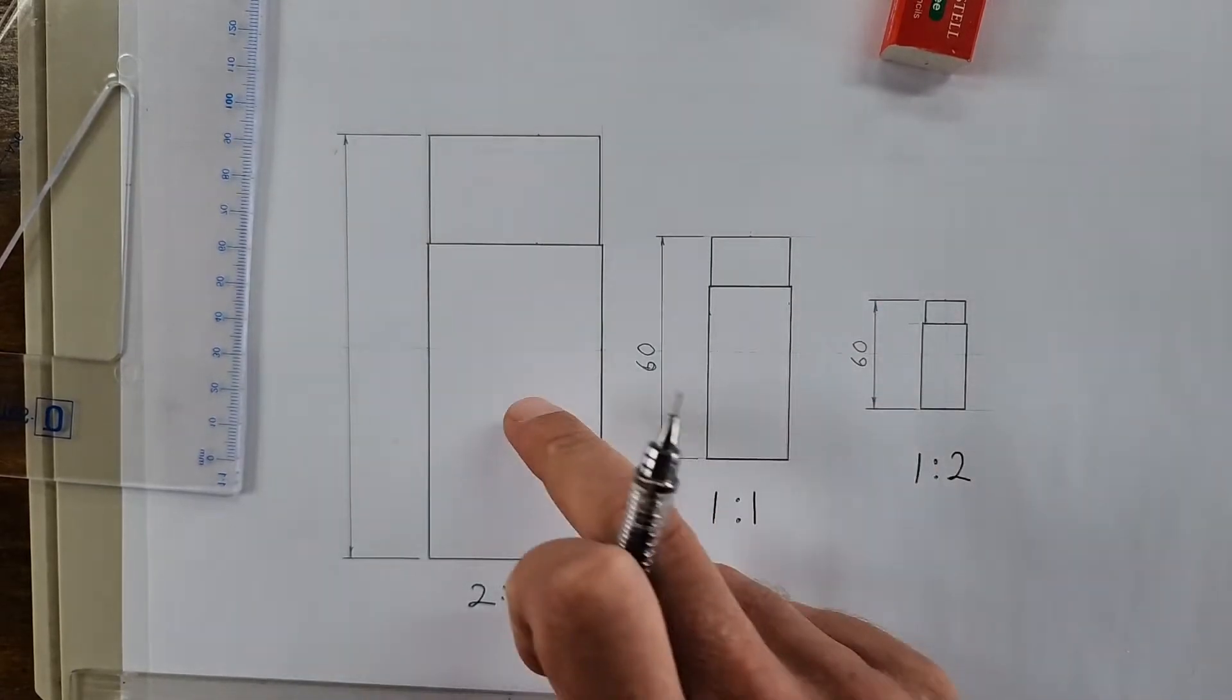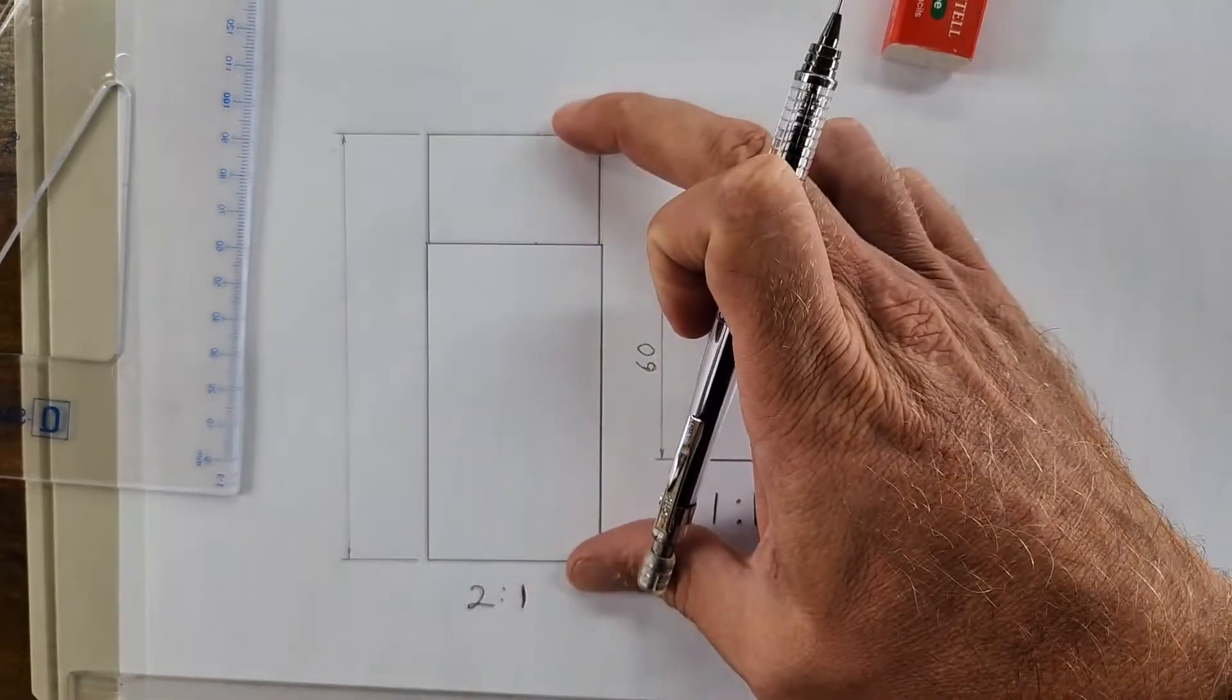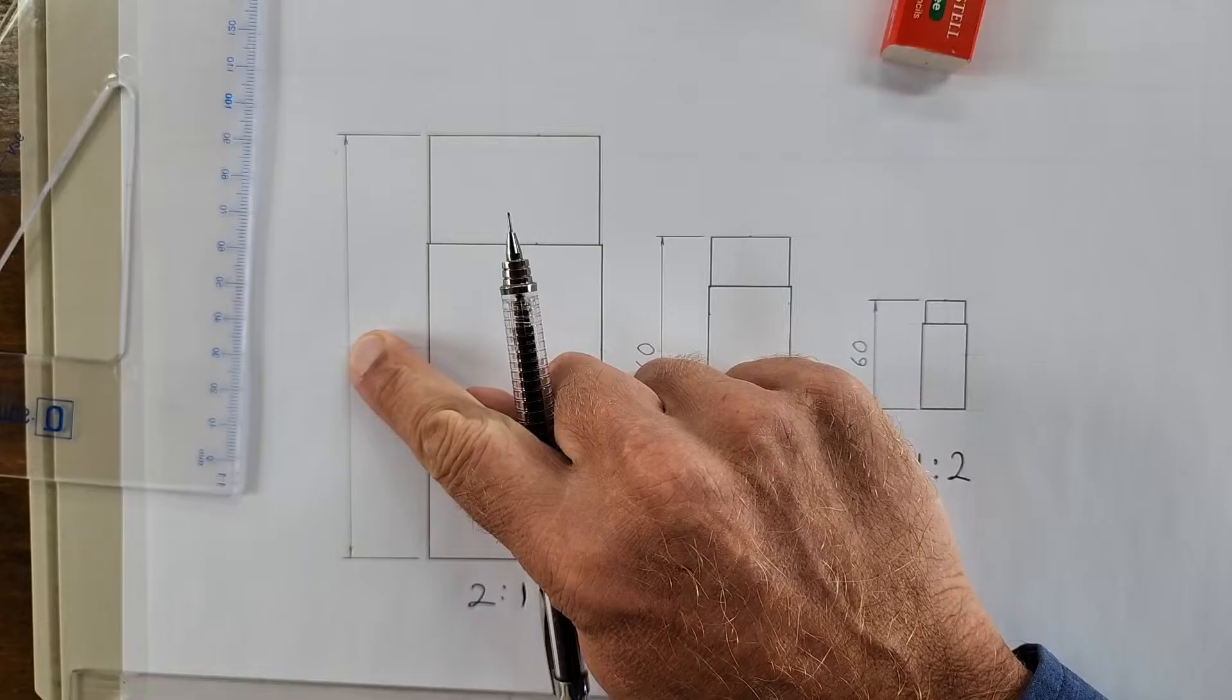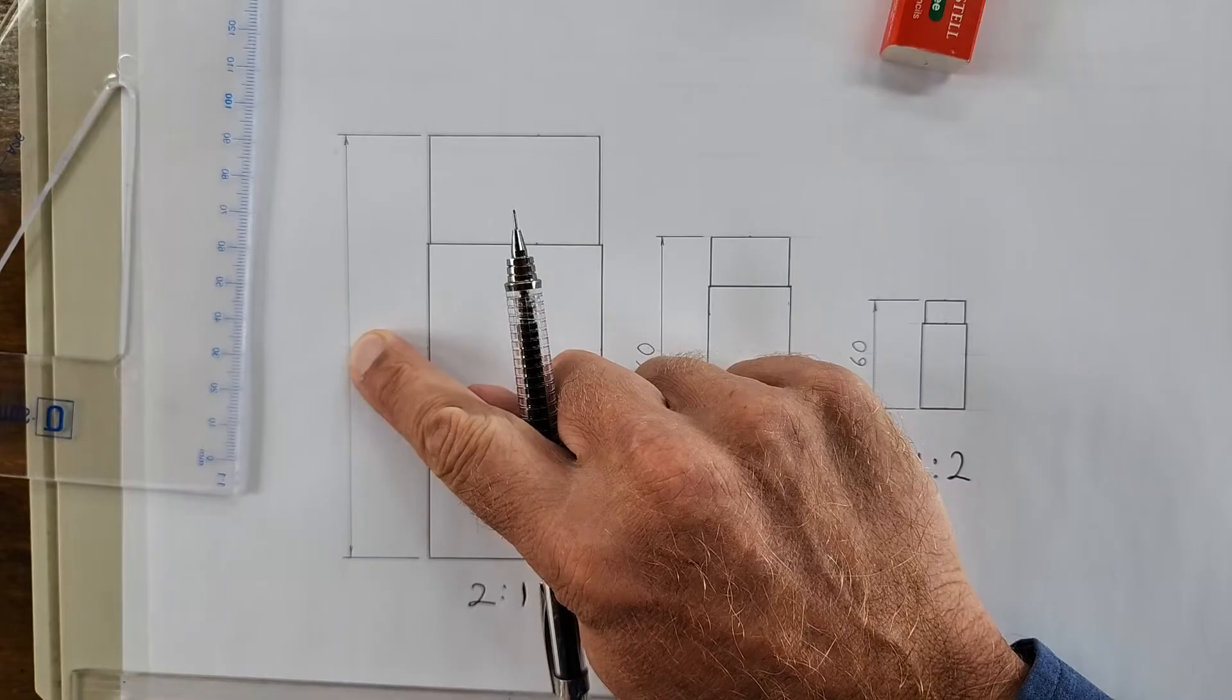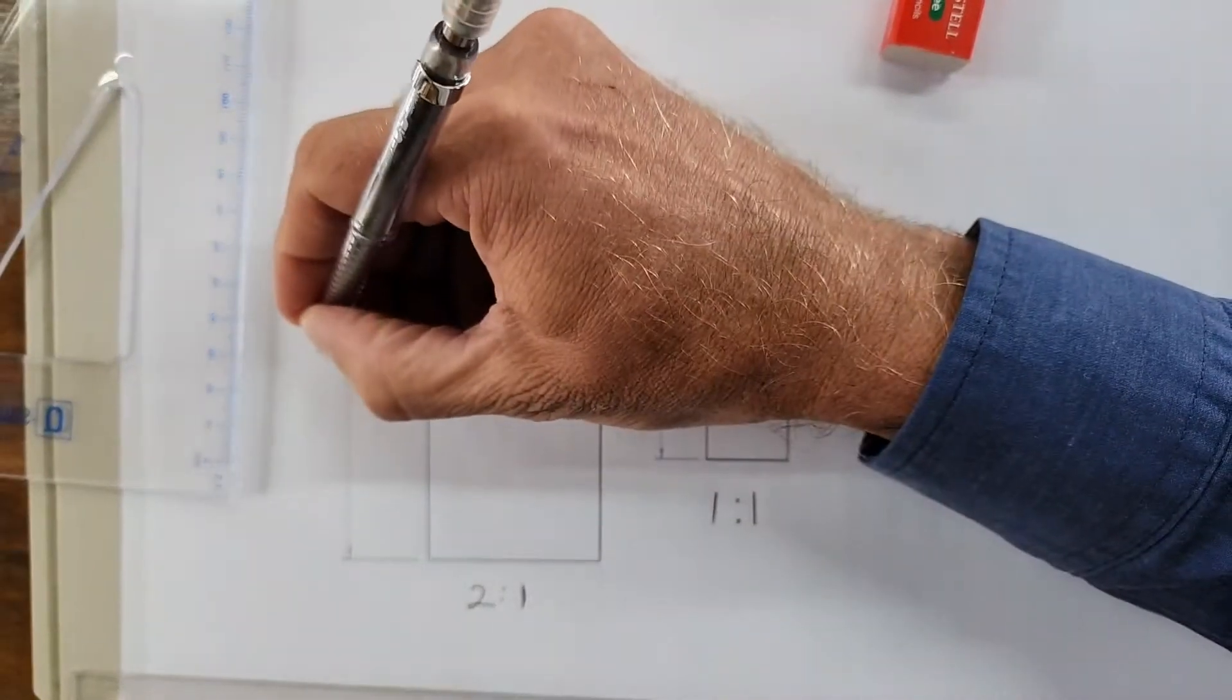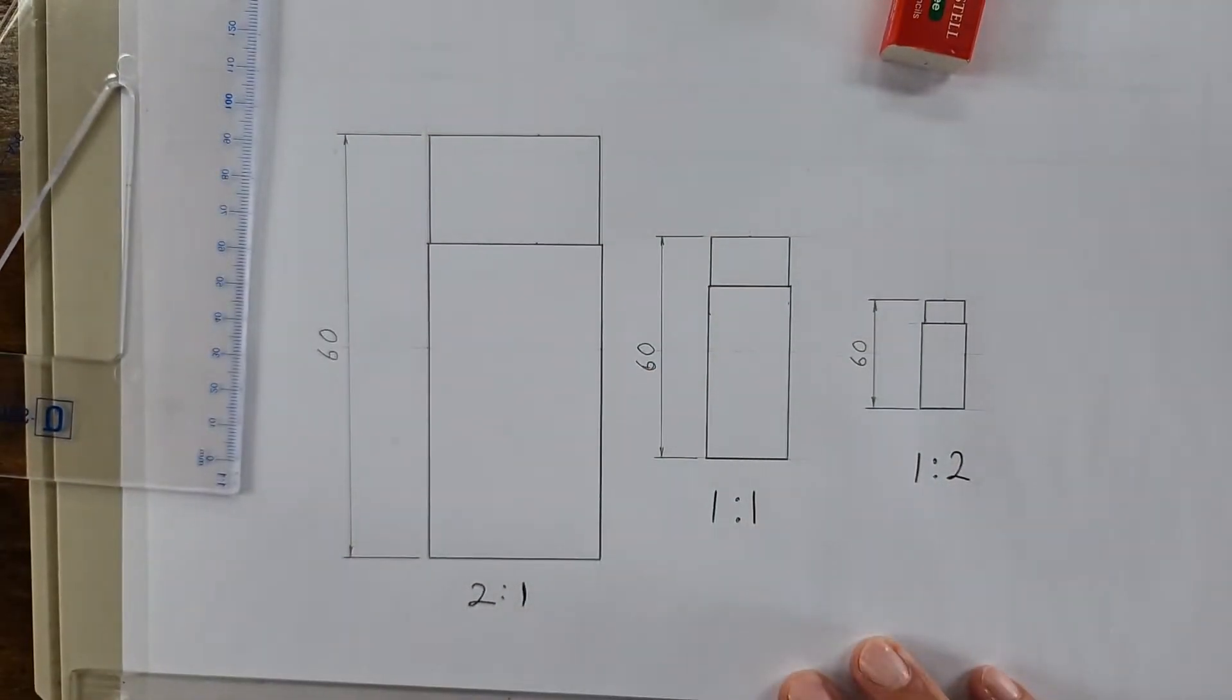What about this one now? If this is now scale 2 to 1, what will that dimension here read? Are you sure? 60. Why? The drawing changes, but what I write here never ever changes. Isn't that wonderful?